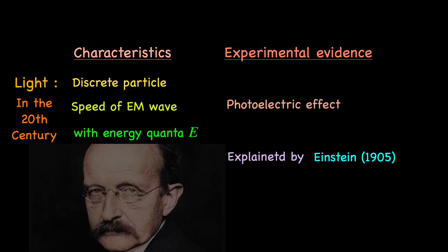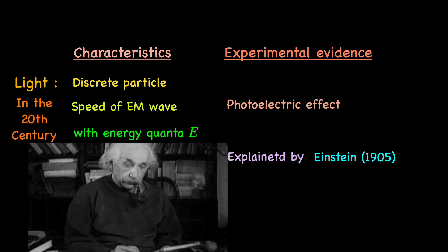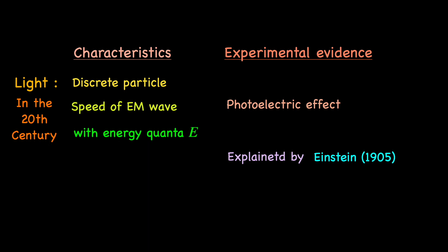Following the footsteps of Max Planck, Einstein proposed that the energy quanta E carried by this light particle is proportional to its frequency nu. This was experimentally verified and the proportionality constant is known as the Planck's constant.